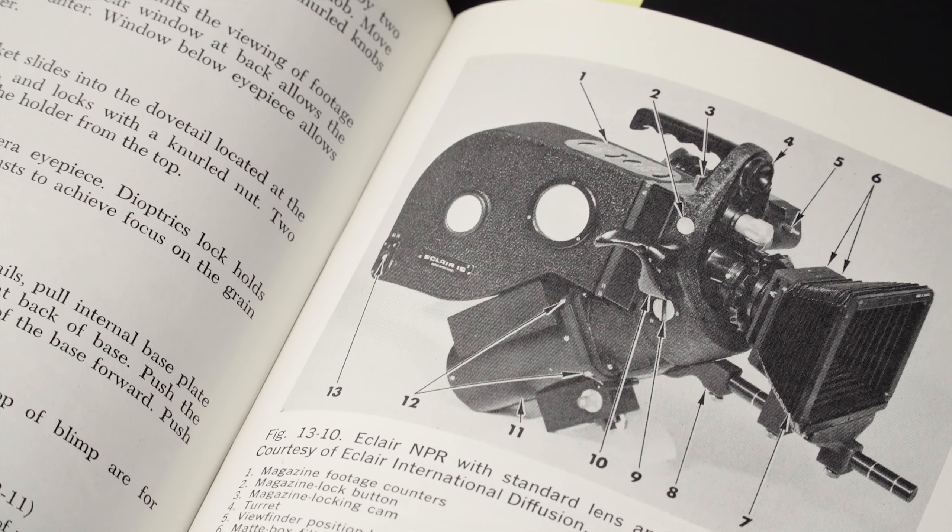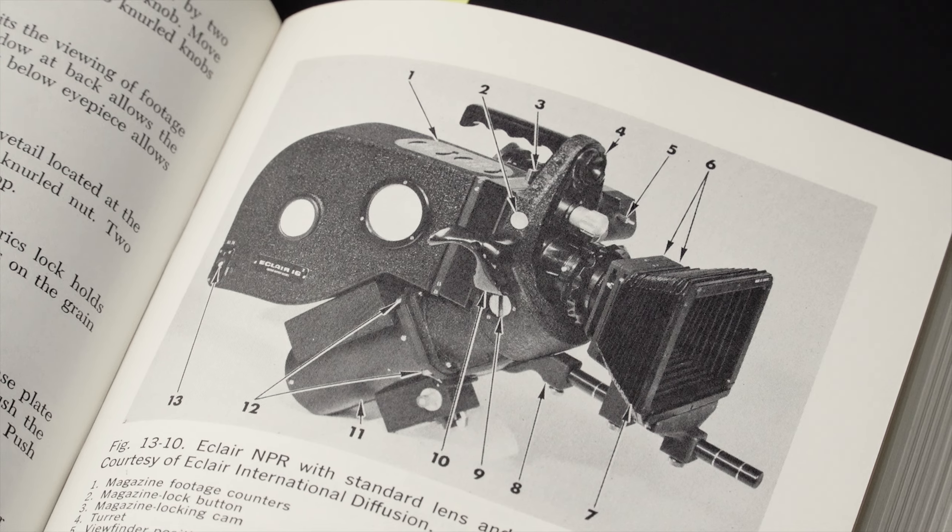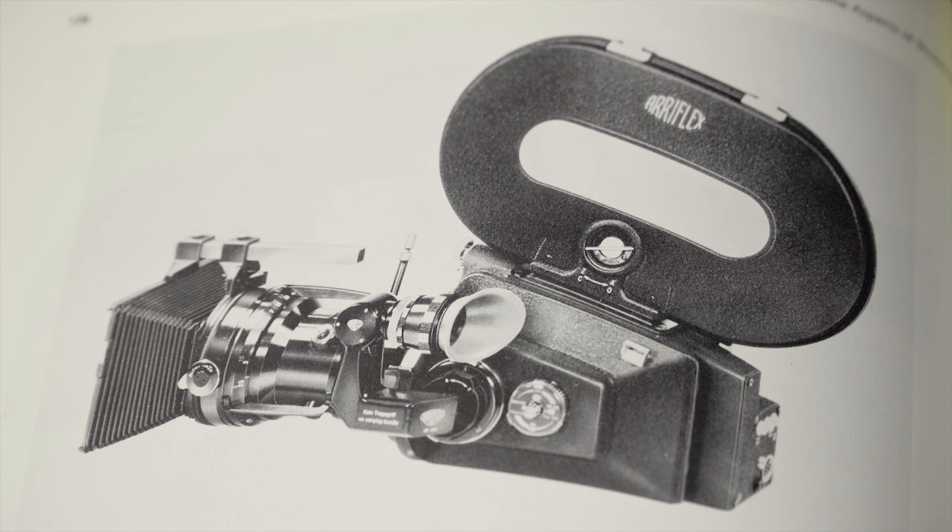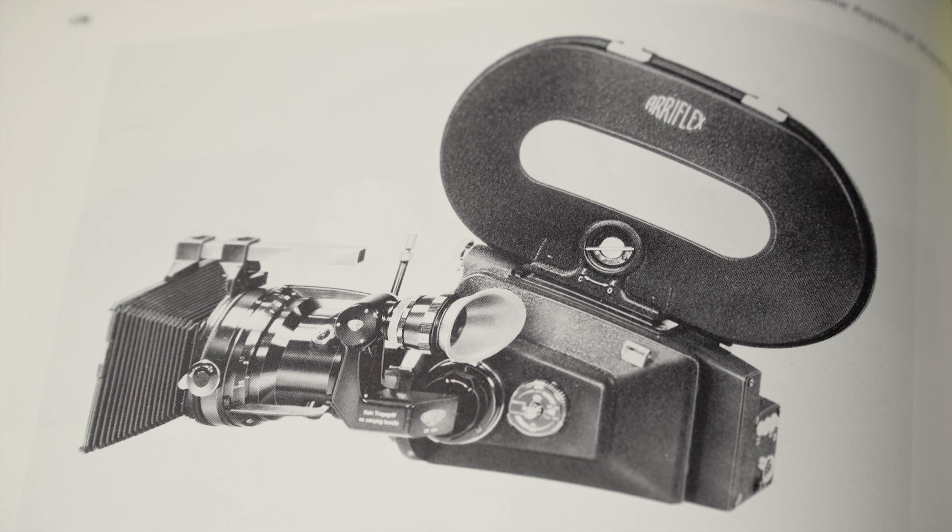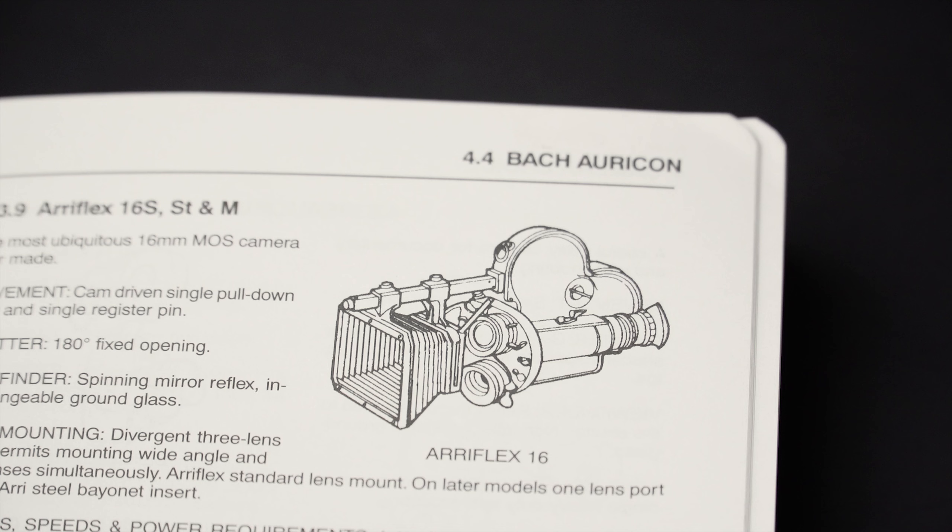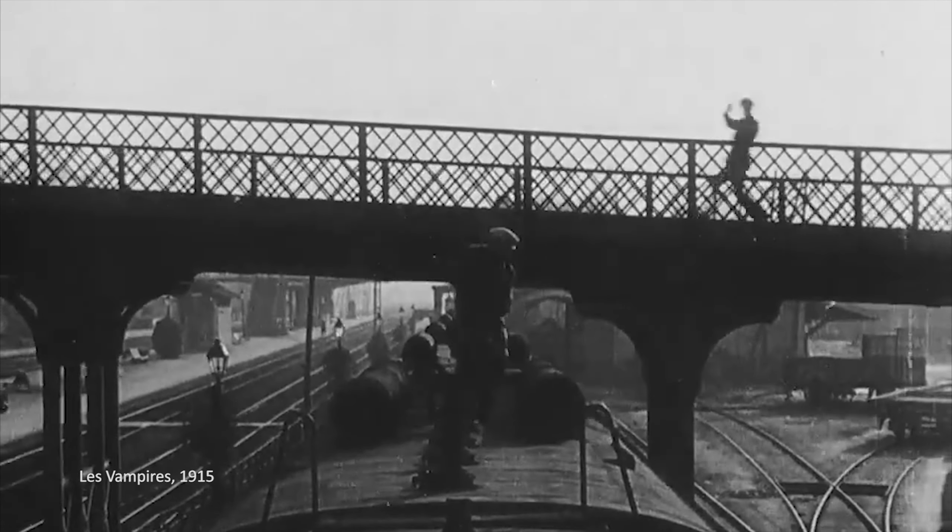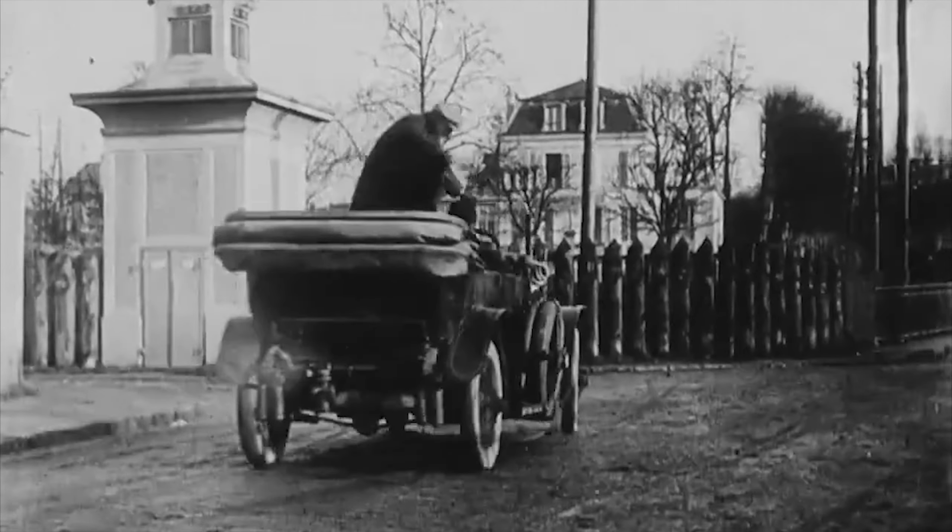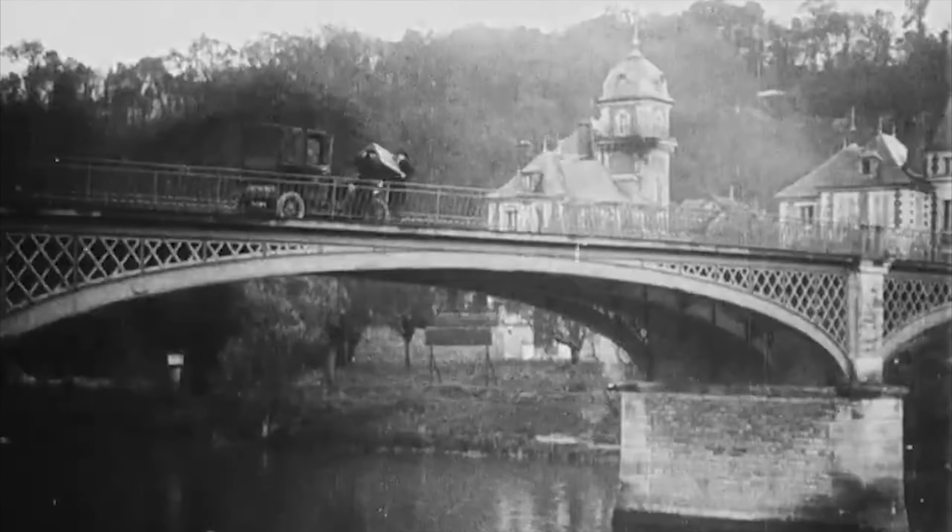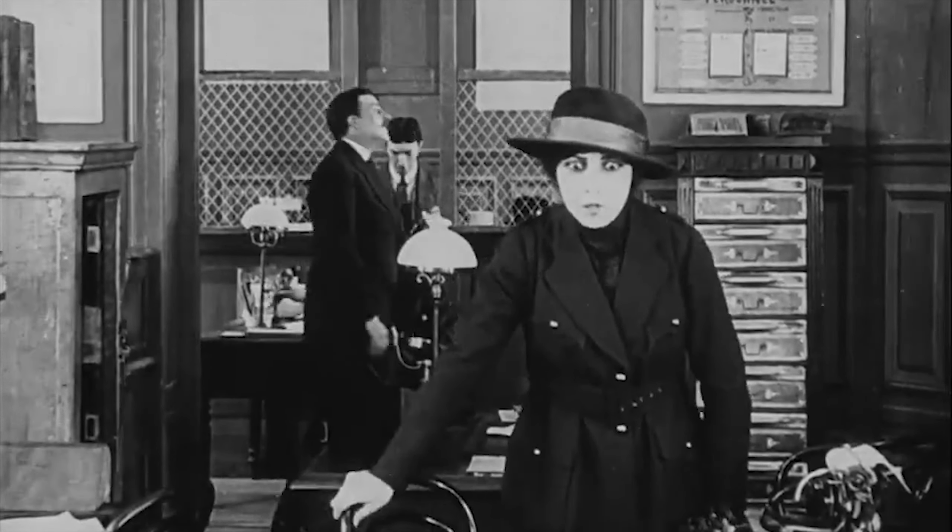Cameras like the Eclair NPR, Arri SR, Arri BL, and several 35 millimeter cameras from the time evolved with this technology. It is common to find wild, pilot tone, and crystal sync motors for these cameras. Keeping a camera running at an exact speed will help to maintain the image looking normal, not like those Charlie Chaplin movies with the funny movement. Probably the most important aspect of keeping a camera running at a perfect speed is the ability to record sound.